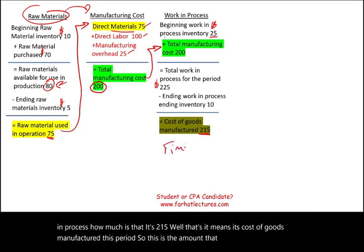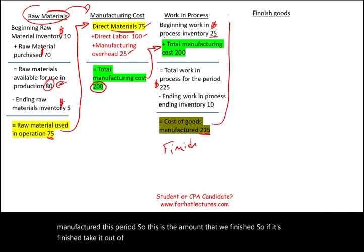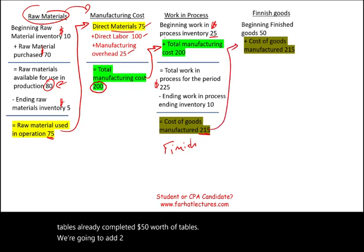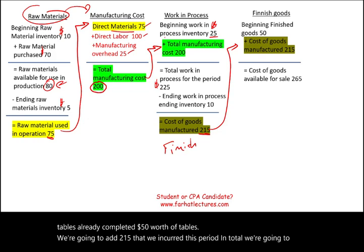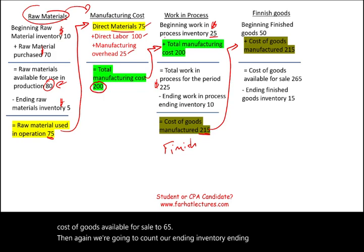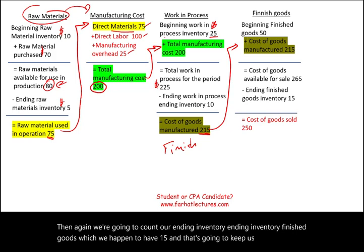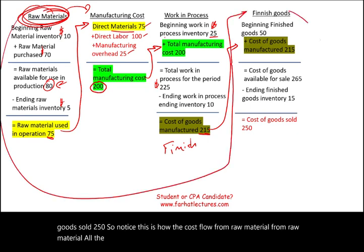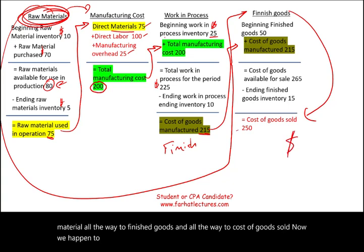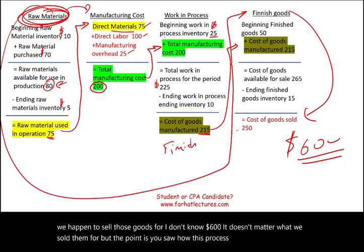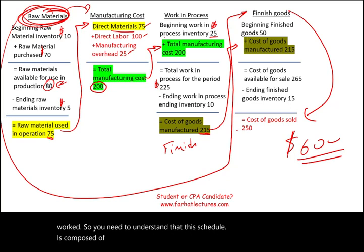Once it's finished, we take it out of work in process and put it into finished goods. In finished goods we have some tables already completed — $50 worth. We add the $215 manufactured this period, giving us cost of goods available for sale of $265. Then we count ending inventory of finished goods, which is $15, leaving us with cost of goods sold of $250. This is how cost flows from raw material all the way to finished goods and then to cost of goods sold.